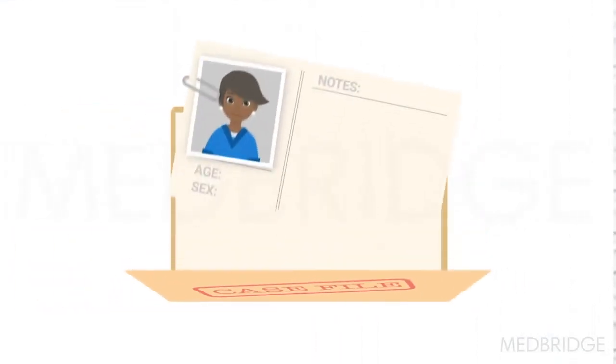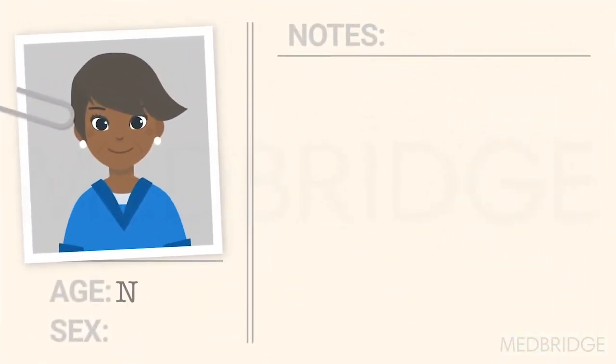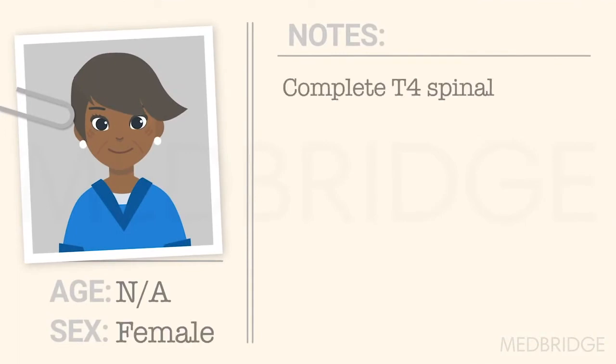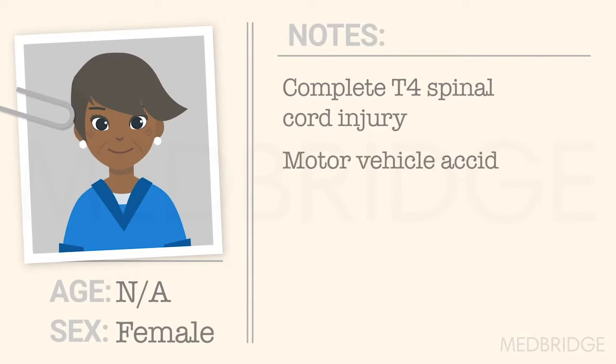Let's do another case. Let's talk about Carrie Owen. Carrie Owen was admitted to the rehab unit with a diagnosis of a complete T4 spinal cord injury. She was involved in a motor vehicle accident two weeks ago, and it's your job to complete the intake assessment — the initial head-to-toe nursing physical assessment. Which tests would you select?